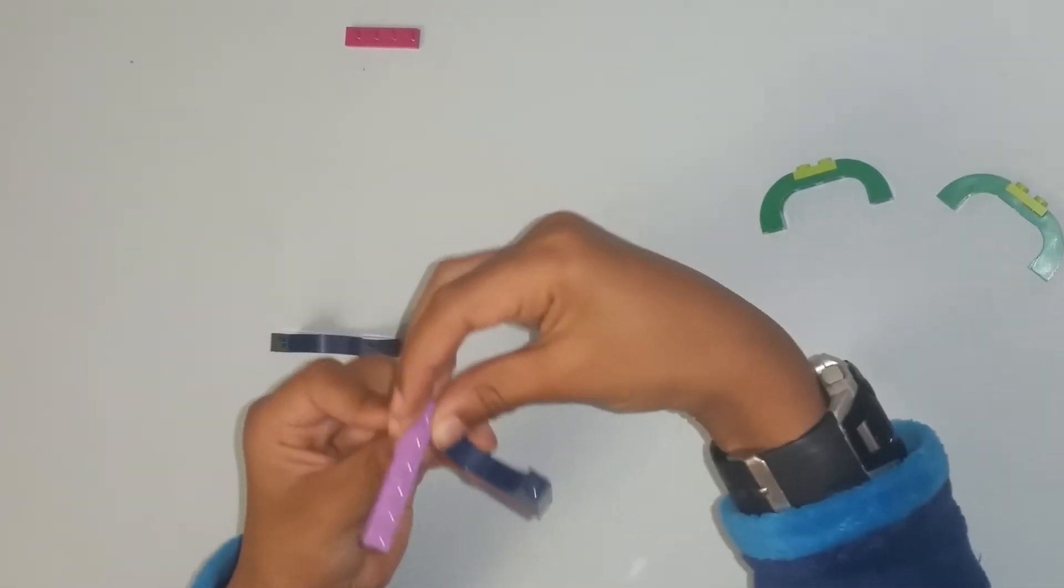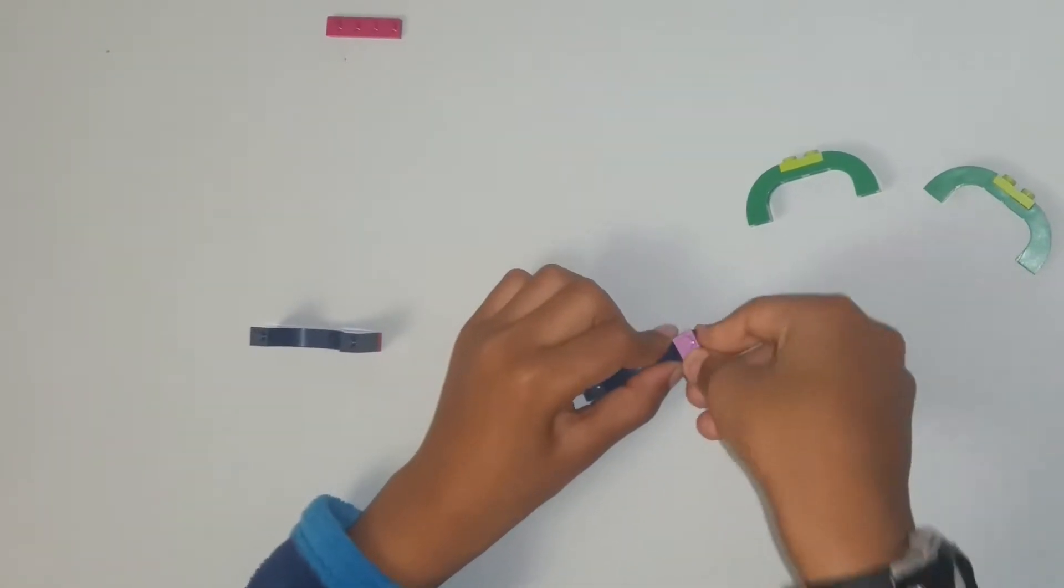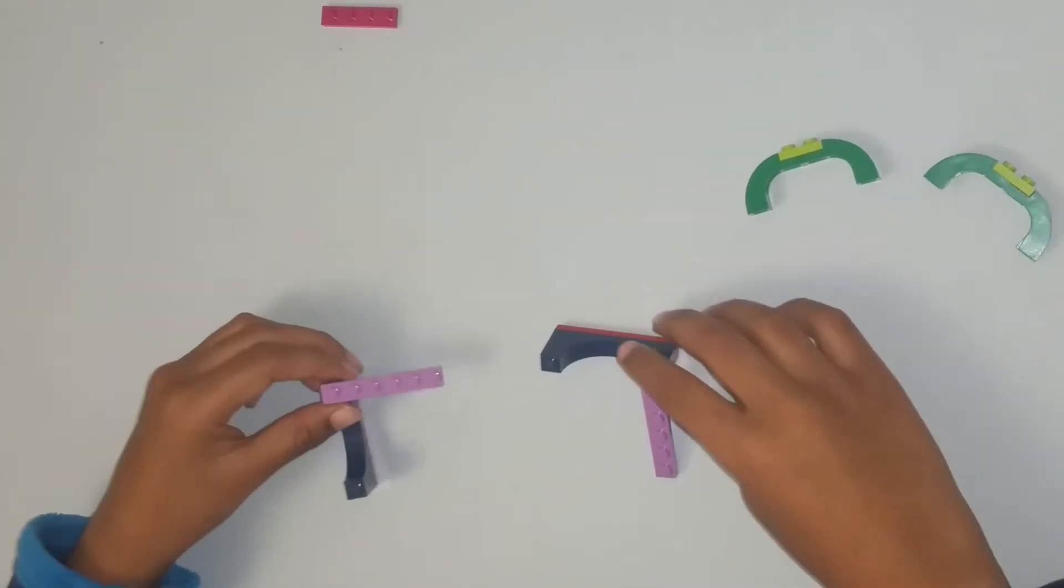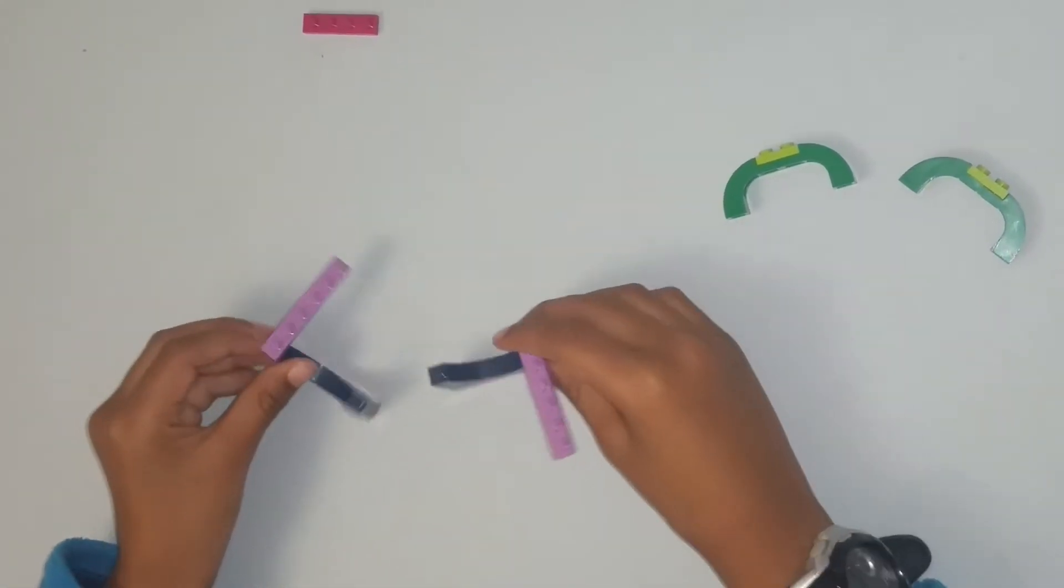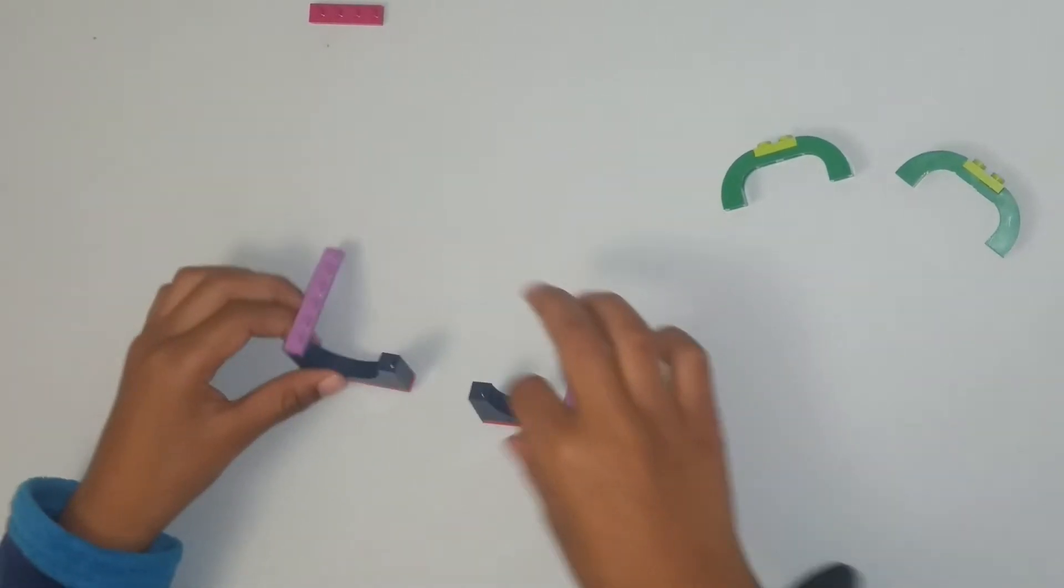And then you are going to put another 1x6 piece. Then you are going to stick them like this. And now you should have it like this.